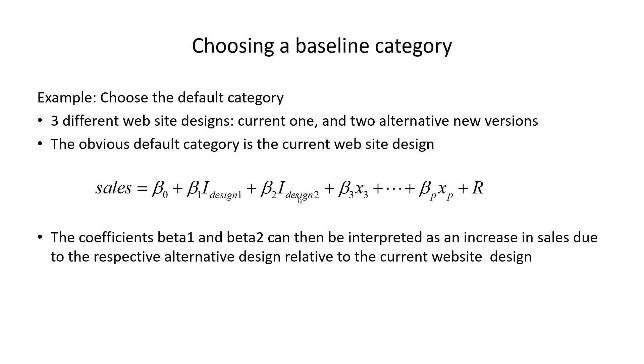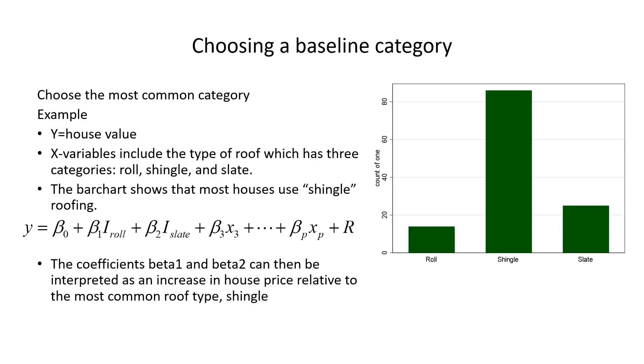Second choice: choose the most common category. Here we have house value as the response, and the X-variable includes type of roof, which has three categories: roll, shingle, and slate.